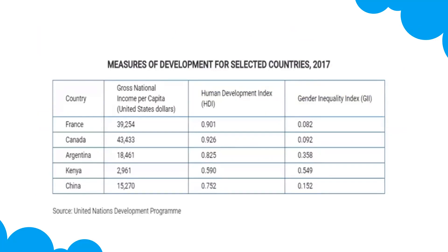Here's a summary table looking at the big measurements of development — GNI, HDI, and GII — comparing differences between countries. For example, France has a solid GNI, a high Human Development Index rate, and a low Gender Inequality Index. Comparing that to Kenya shows notable differences across these indicators.